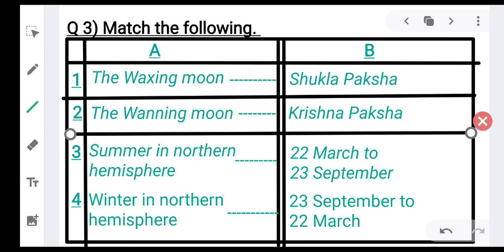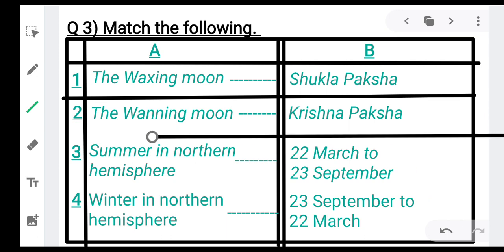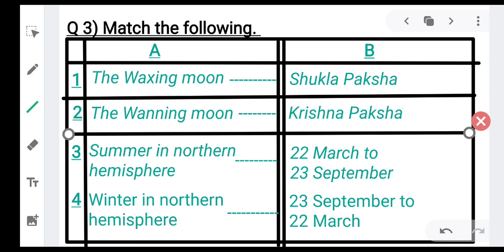Third one is summer in northern hemisphere. And fourth is winter in northern hemisphere. So the answer is 22nd March to 23rd September. And fourth is winter in northern hemisphere, the answer is 23rd September to 22nd March.